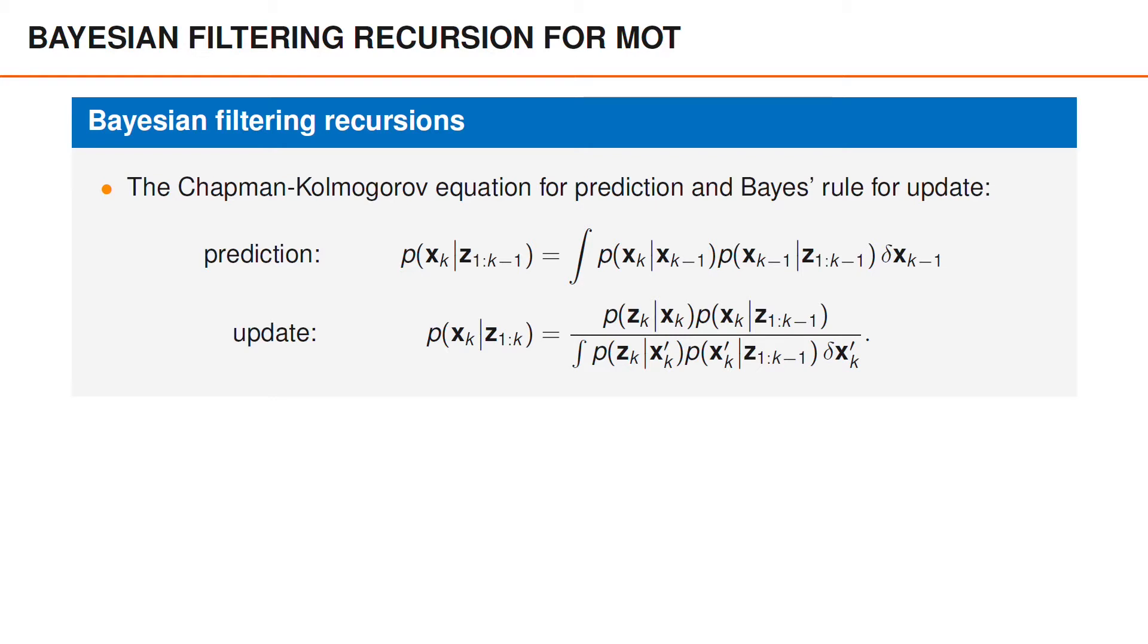In the prediction step, we multiply the posterior at time k minus 1 with the motion model, and in the update step, we multiply the predicted density with a measurement model before we normalize the posterior distribution. In order to develop multi-object tracking algorithms using the above equations, we first need a motion and a measurement model.